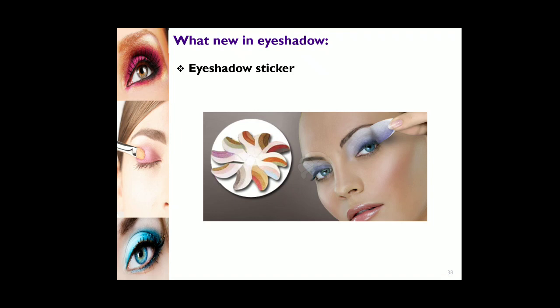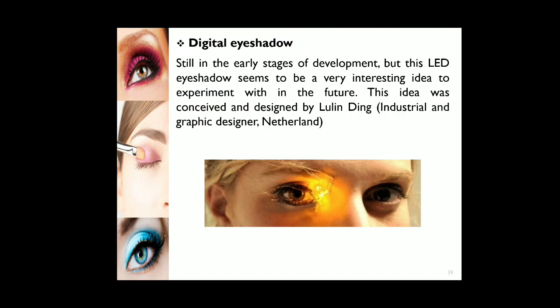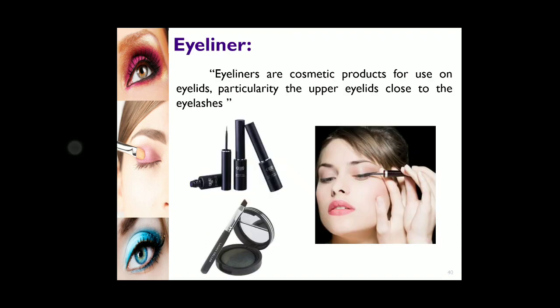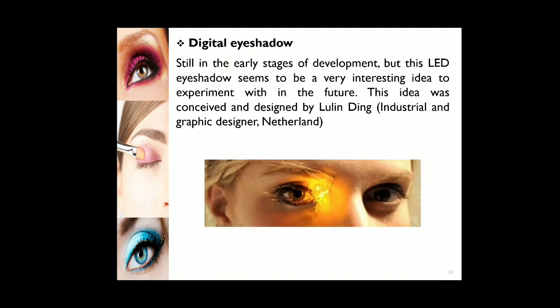These are certain novelties or innovations in eye shadows. Eye shadow stickers are available in the market — you simply apply the sticker to the area around the eye, press slightly, remove the cover, and you have the design on your eyes. A digital eye shadow with an LED bulb is also available but has not had great success in the market. That is it for eye shadow; for eyeliner, we will study in the next lecture. Thank you.